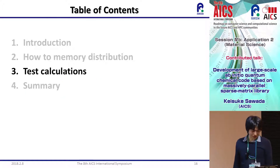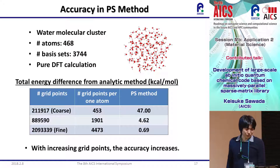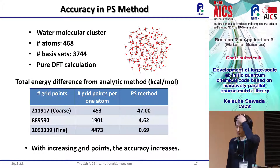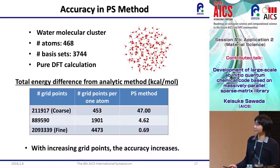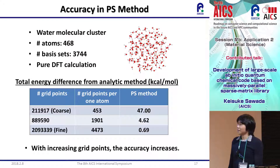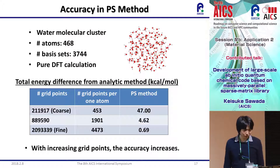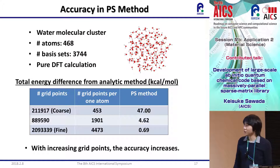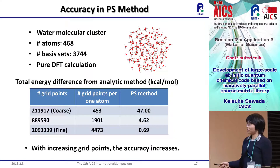Moving to the third section: test calculations. First, I examine the accuracy of the PS method within a pure DFT calculation. A water molecule cluster consisting of about 30,800 basis sets is used as the test system. The table shows the total energy difference from the analytical integral method. When increasing the number of grid points, the accuracy of the PS method increases. I also confirmed good results for several other molecular systems. Coarse and fine grids used in upcoming slides correspond to the accuracy levels shown here.